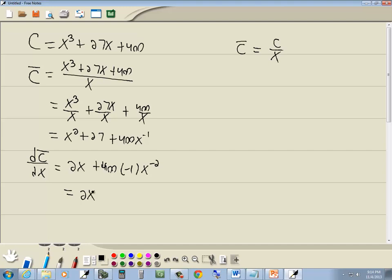Which then gives us 2x. 400 times negative 1 gives us negative 400. x to negative 2. Which gives us 2x minus 400 over x squared.